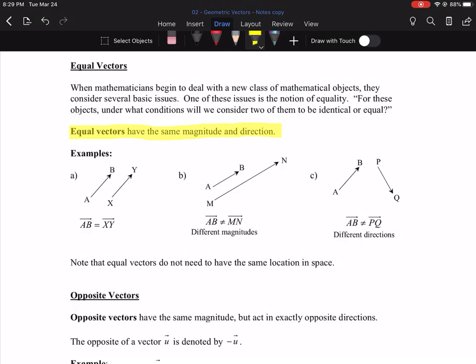So take a look at these examples. Part A, AB and XY. They're representing two vectors that are going in the exact same direction, and they're the exact same length. So AB is equal to XY. Part B, they show us two different vectors that are going in the same direction, but they're obviously very different lengths, and so we say that they are not equal vectors.